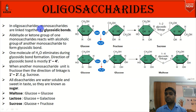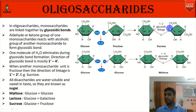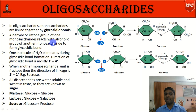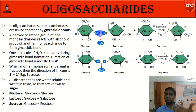In oligosaccharides, monosaccharides are linked by glycosidic bonds. When two monosaccharides come together, the OH of one and the H of another are eliminated (dehydration), forming a glycosidic bond. The aldehyde or ketone group of one monosaccharide reacts with the alcoholic group of another to form the glycosidic bond, and one molecule of H2O is eliminated during this process.